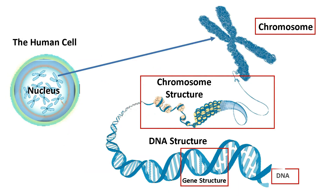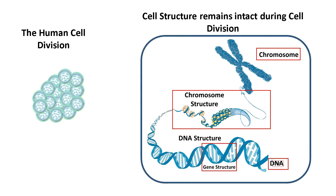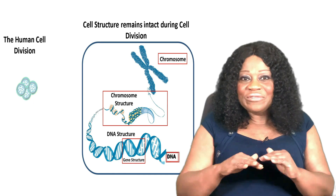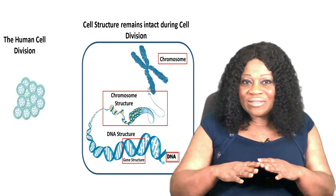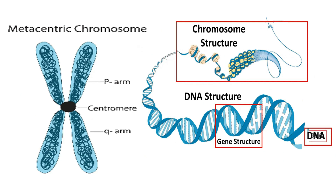For an organism to grow and function properly, cells must constantly divide to produce new cells, replacing old ones. It is critical that DNA remains intact and evenly distributed among cells during cell division. Chromosomes are a key part of the process that ensures DNA is accurately copied and distributed during most cell divisions.